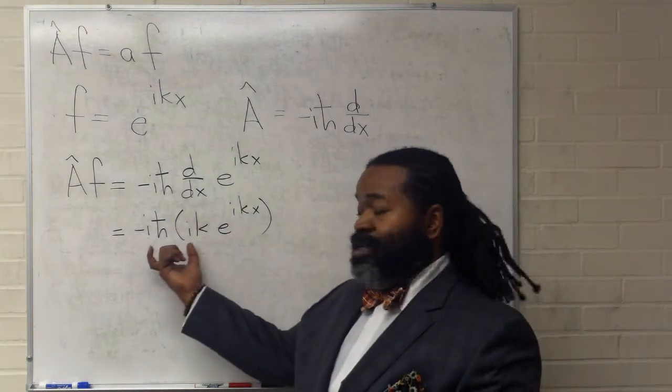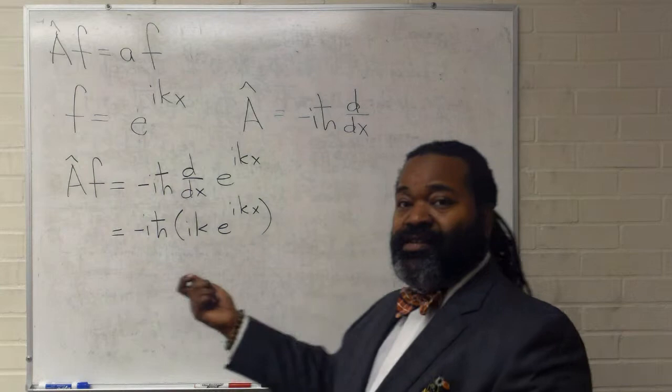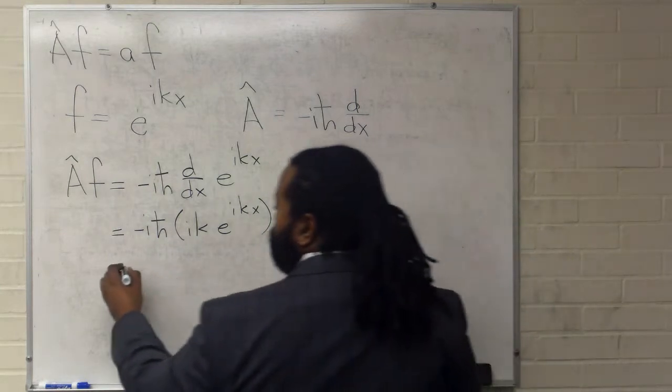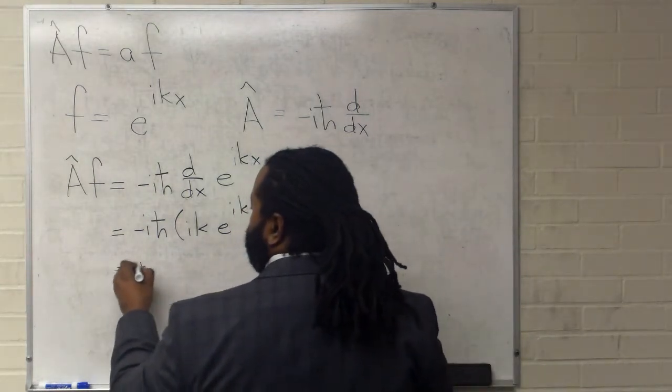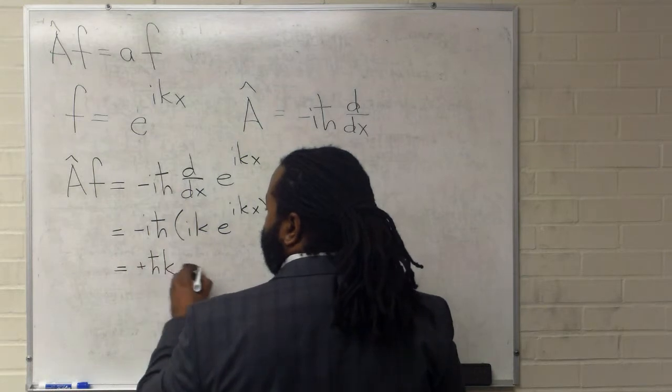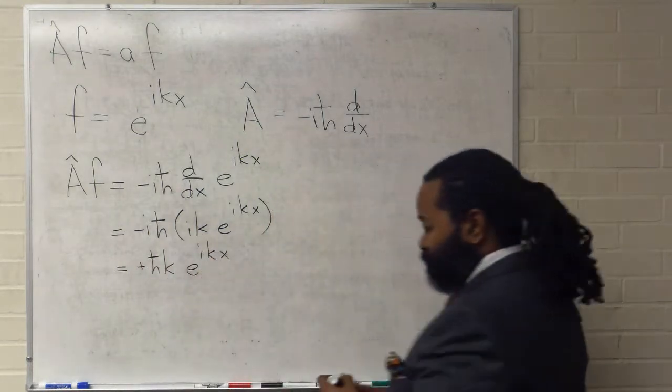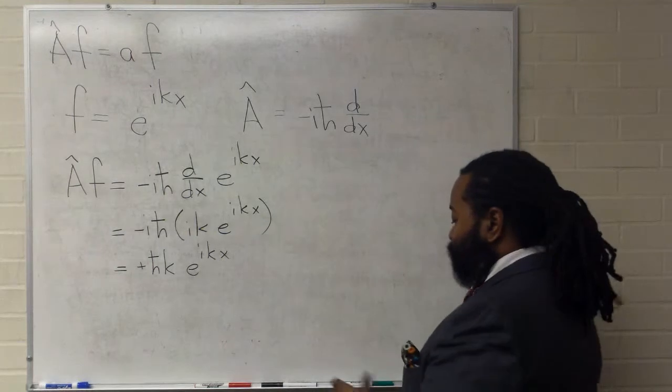At this point, we can mash all these constants together and simplify them. This will give us a positive h-bar k e to the ikx.